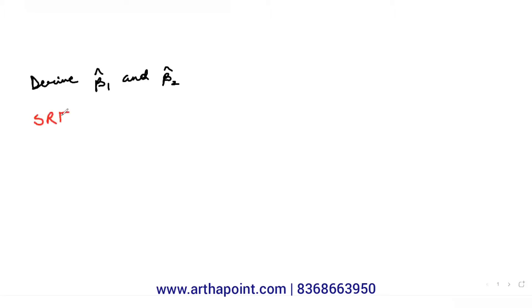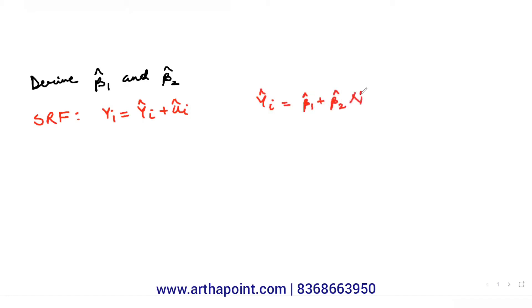We know that the sample regression function can be written as yi = yi hat + ui hat. Here, yi hat is nothing but β1 hat + β2 hat xi. And we know that yi hat is actually a counterpart of the expectation of y given xi, which is in the population regression function.